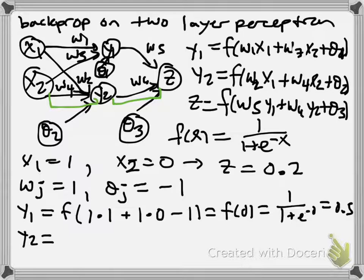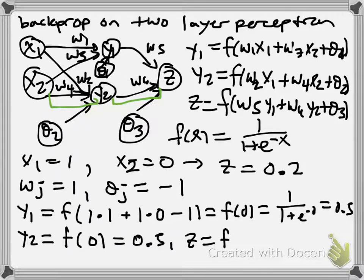Y2, given the same calculation, we get that it ends up being just f of 0, which we know is 0.5, and z is equal to f of 0.5 plus 0.5 minus 1, which again we know is 0.5.